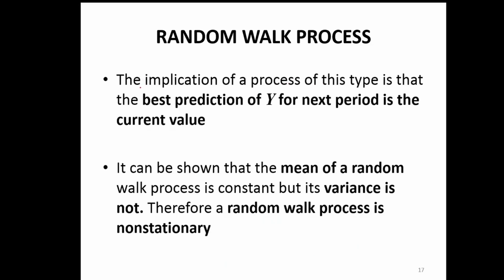What is the takeaway point? The implication of a process of this type is that the best prediction of y for the next period is the current value. If you have a time series data that follows a random walk, just stop there — you don't have to do anything. What you need to communicate to the audience is that the best prediction for this particular time series for the future is nothing but the current value.